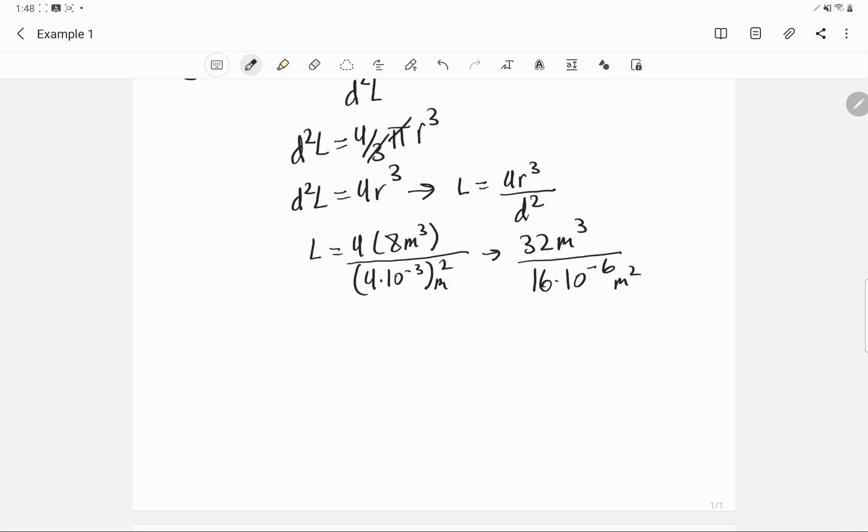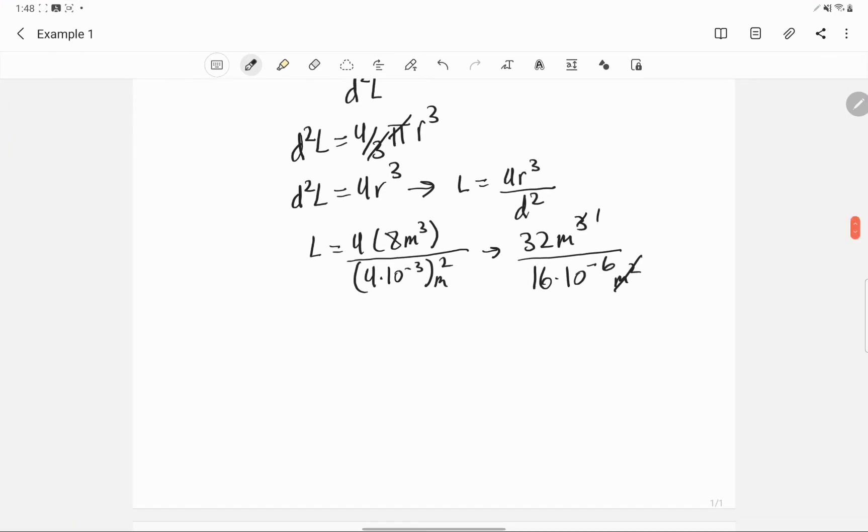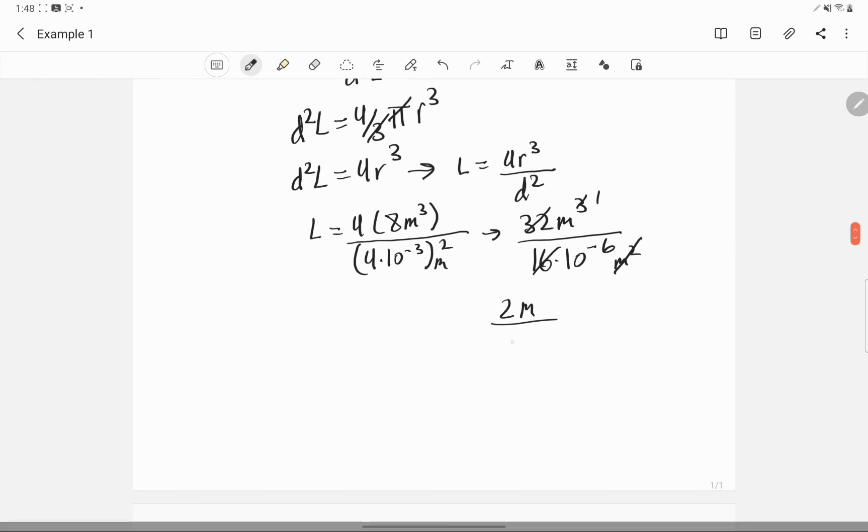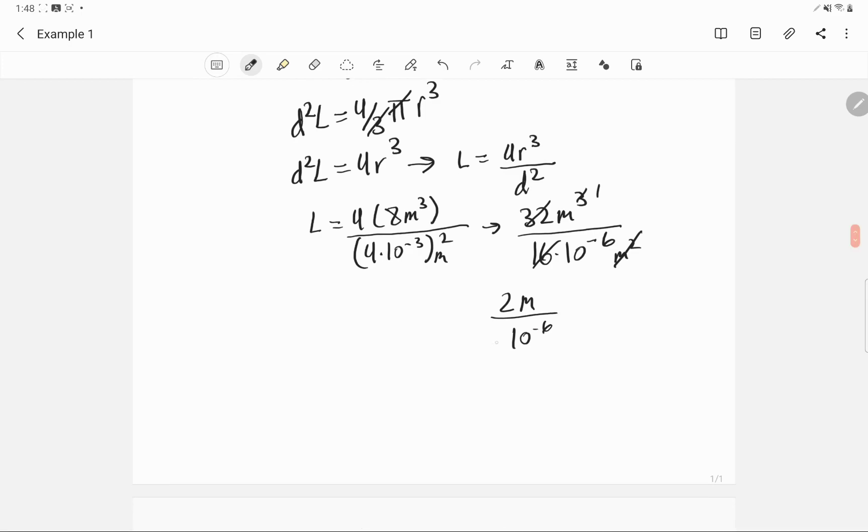Solve this without a calculator. So our units are correct. We're going to be left with 2 meters divided by 10 to the negative 6. And obviously, since this is the denominator, we can bring it up. We can write this as 2 times 10 to the 6 meters.